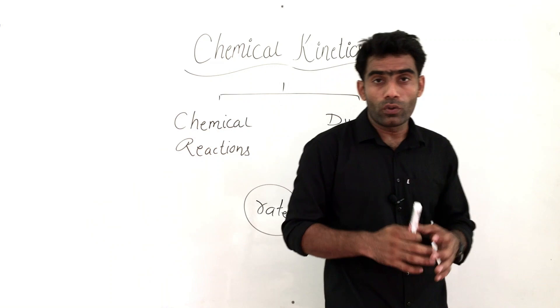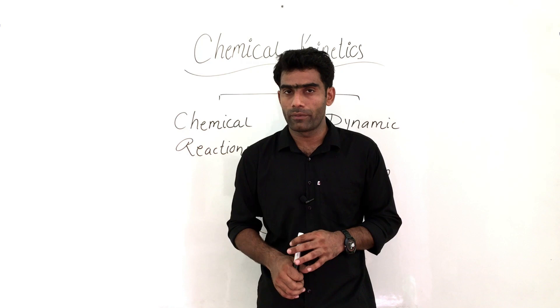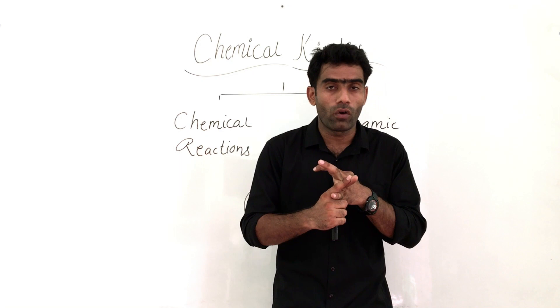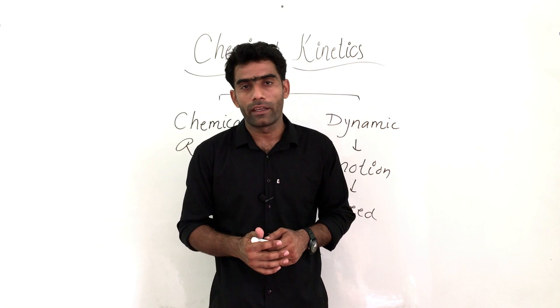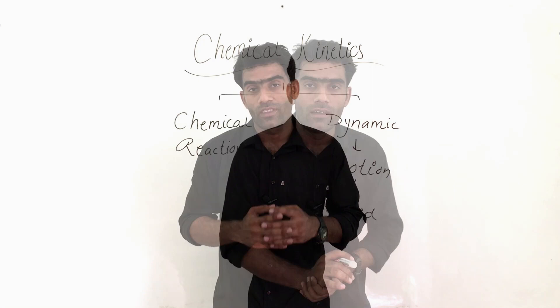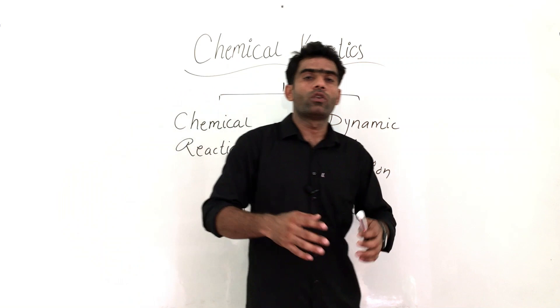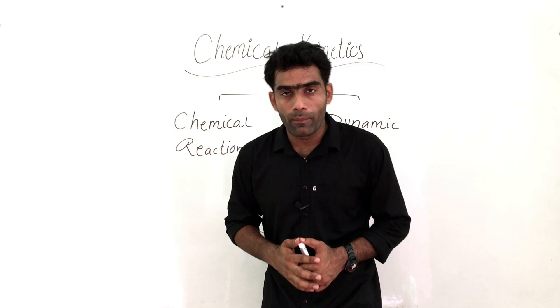So we can define chemical kinetics. We have a broad idea of what this whole chapter requires. Looking at the definition, there are two key terms: one is rate of reaction, another is factors affecting rate of reaction, and then the mechanism by which reactions proceed. We know that chemical kinetics deals with the speed of chemical reactions. On the basis of rate, we can divide chemical reactions into three categories.